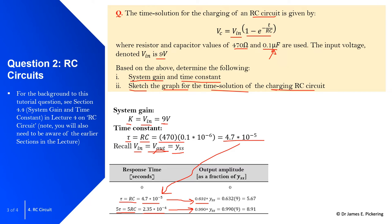Using the standard table: at one time constant, 0.632 multiplied by yss — where yss equals nine — gives 5.67 volts. At five time constants, 0.990 multiplied by nine gives 8.91 volts. The system gain is nine volts and the voltage in equals voltage out for the capacitor, so 8.91 volts is very close to the capacitor being fully charged.